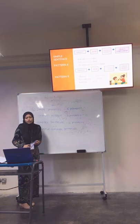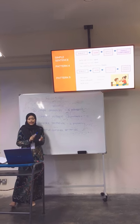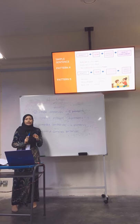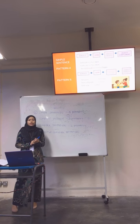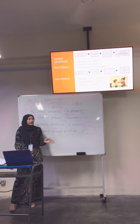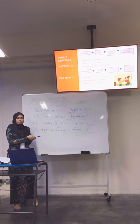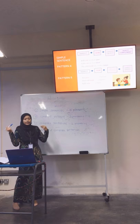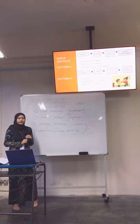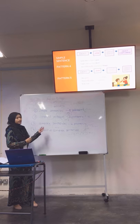For pattern 4, it consists of subject plus verb plus direct object plus object complement. Object complement is a noun, pronoun, or adjective which follows the direct object and provides details about that object. For example: 'Bella let the door open' — direct object is the door, object complement is open. Second example: 'Candy cut her hair short.' Third example: 'The child made her mother happy.'